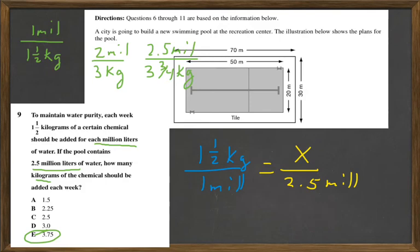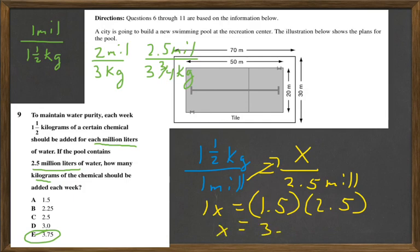So then we just cross-multiply and divide. I get 1x equals 1.5 times 2.5. And if I plug that in a calculator or work out the multiplication in decimals, x equals 3.75. So the answer is E again.